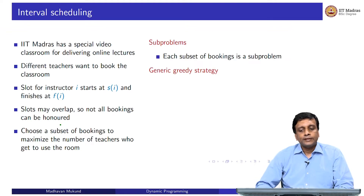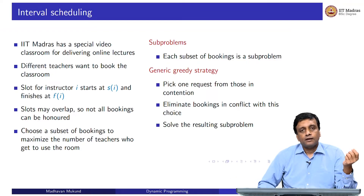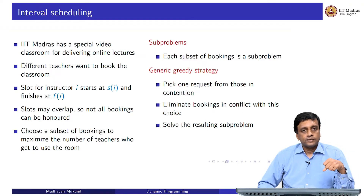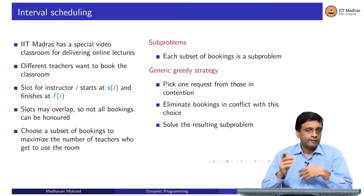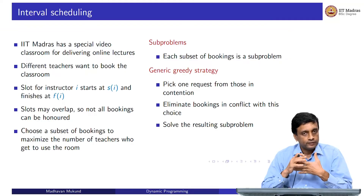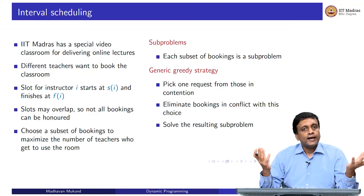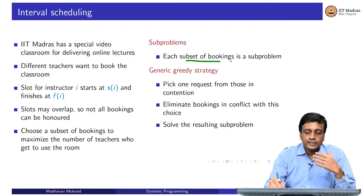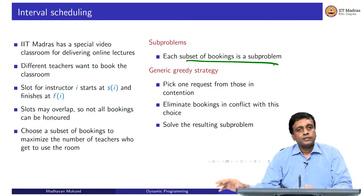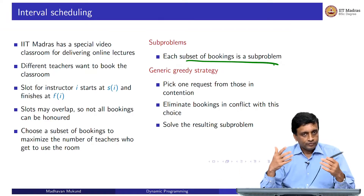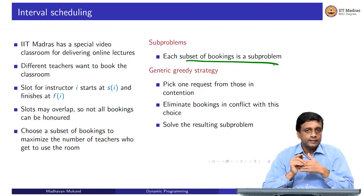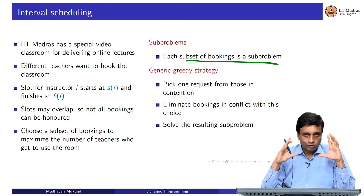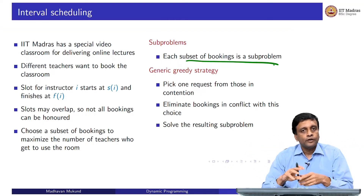Here we have sub-problems: each subset of bookings is a sub-problem. The greedy strategy says pick based on some criterion the first request to schedule, then remove overlapping requests, and solve what remains — a subset of the original problem. This inductive structure means: to solve the whole problem, I take something out and solve a smaller version. Since subsets are exponential — 2 to the n for n bookings — there are in principle 2 to the n different sub-problems.